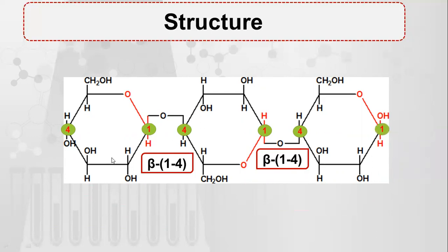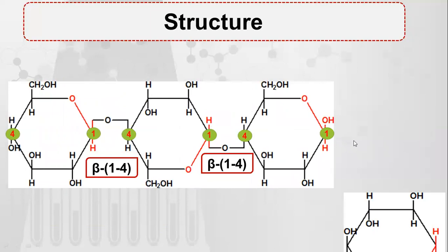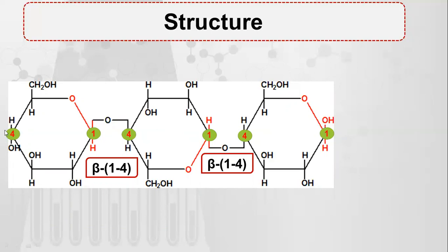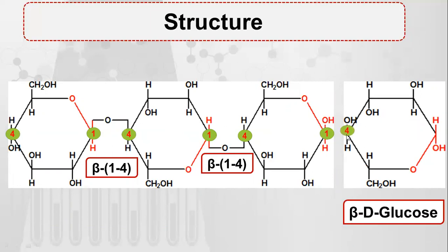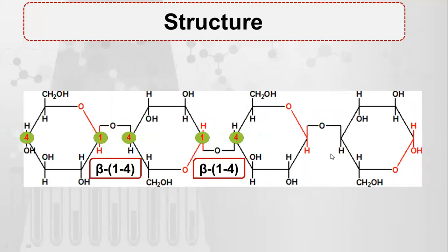Further addition can occur because carbon one and carbon four are still free. Each time, if the OH on carbon one is up, the OH on carbon four must also be brought up, requiring the ring to be flipped — the oxygen side comes down and the CH2OH side comes down. A beta-1-4 linkage develops again. In this way, a very large molecule — a polysaccharide — is formed, which is a homopolysaccharide with all beta-1-4 linkages, making it a linear polymer with no branching.